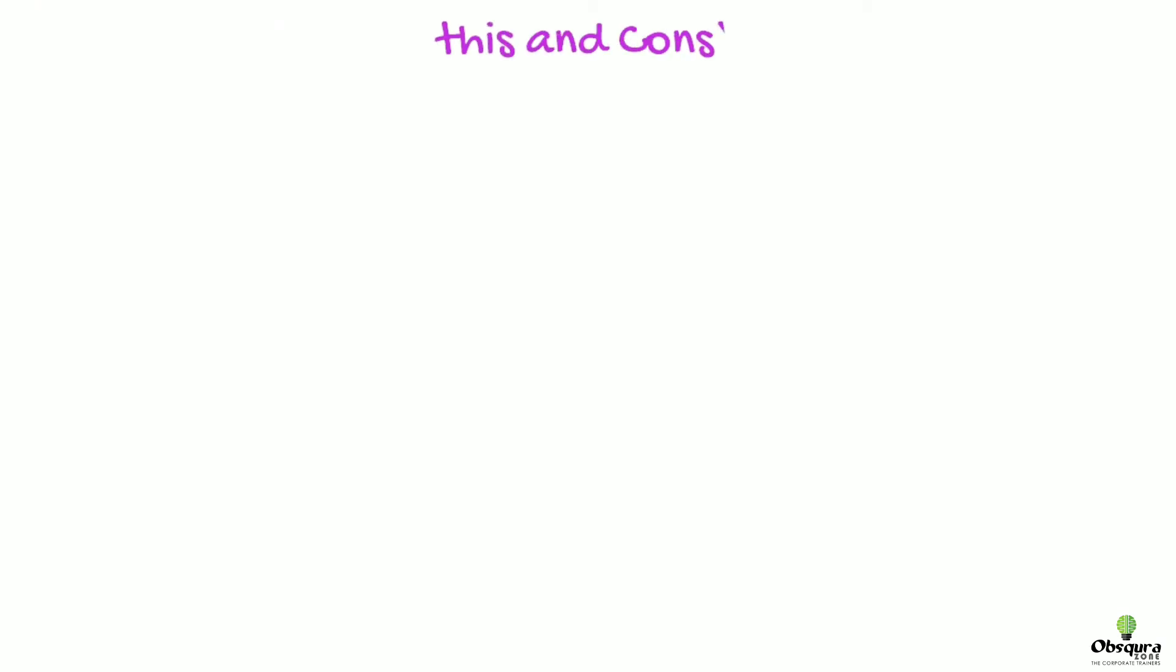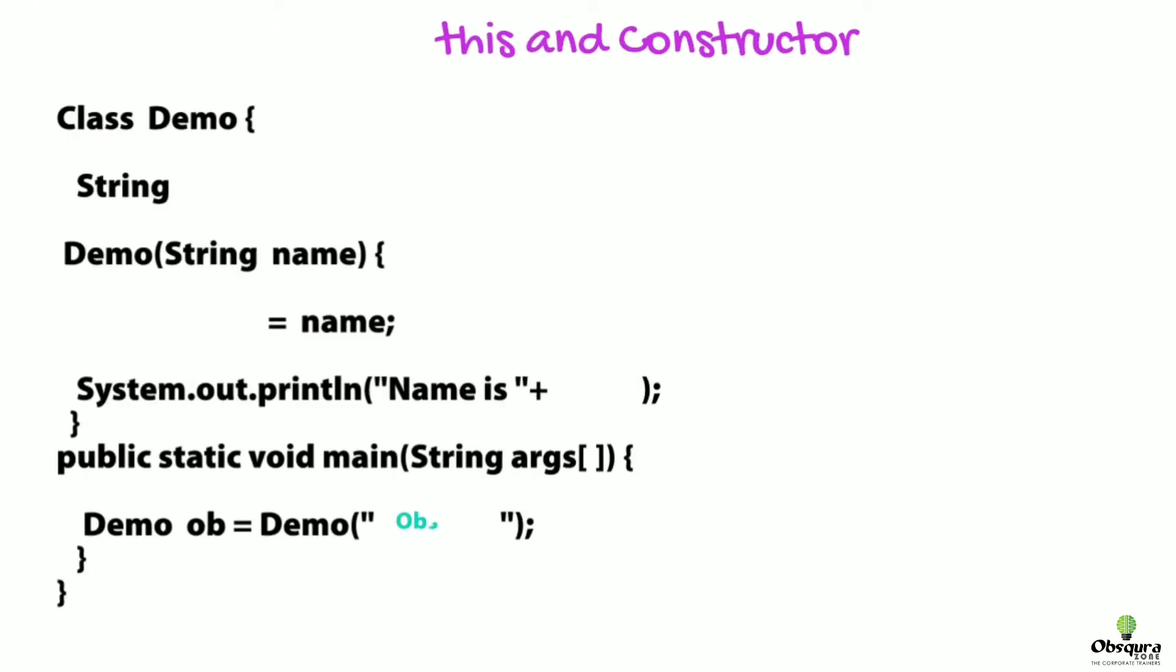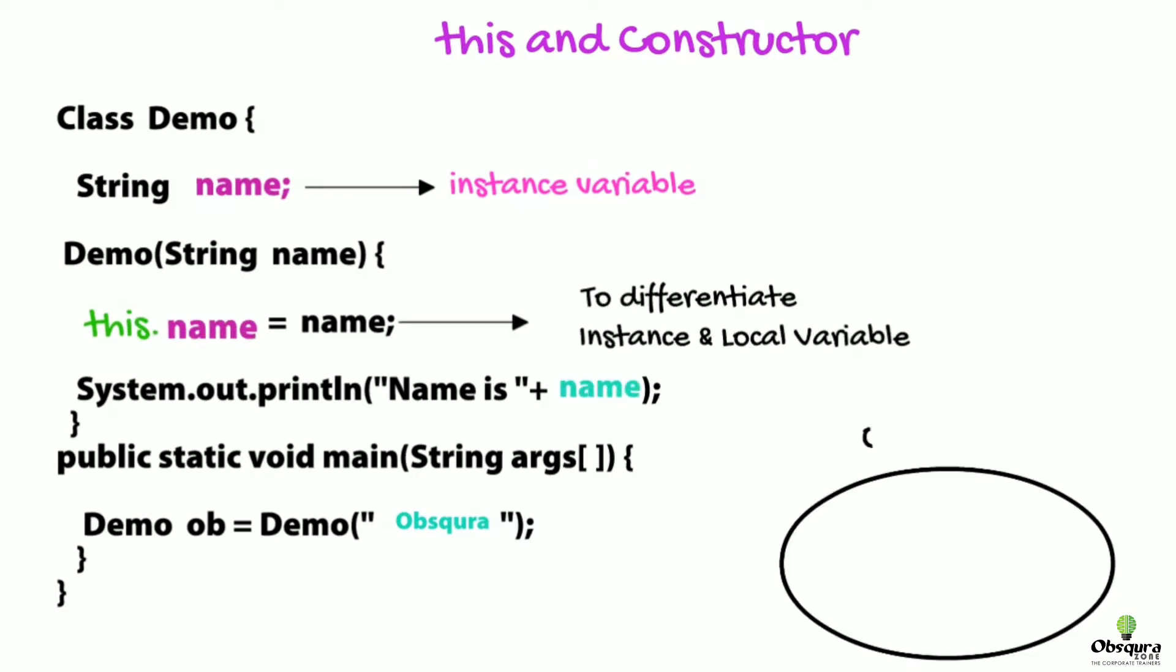In order to resolve this issue, when we use this keyword, then the JVM will understand the instance variable of that class. If you observe the output this time, we will get the desired output.